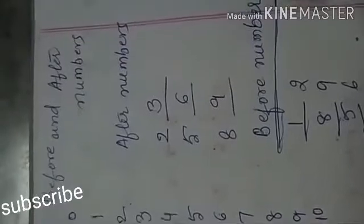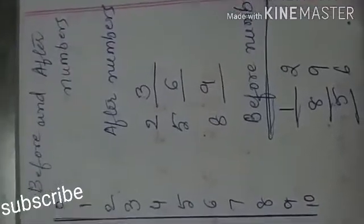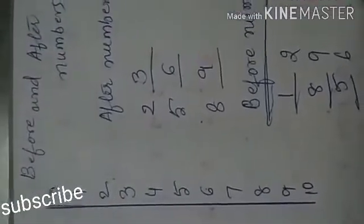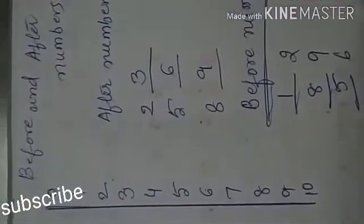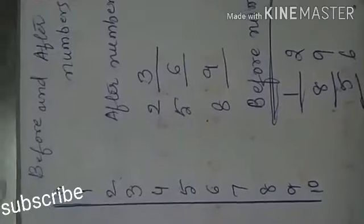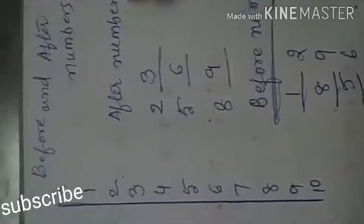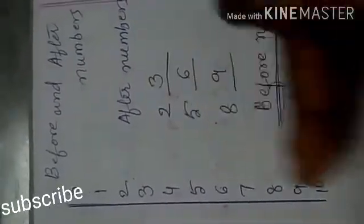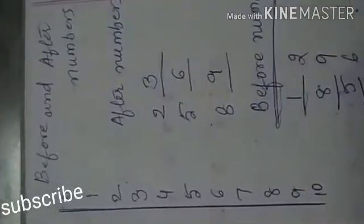These are the after numbers and also before numbers. Most of the students will get confusion in after numbers. After numbers means which come down. Before means which come above. Okay children, are you clear?